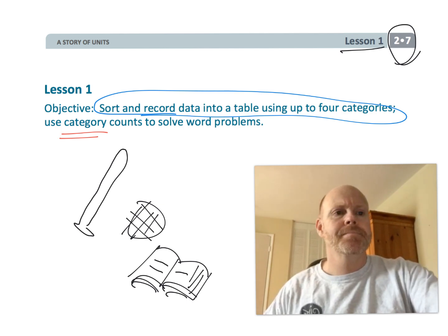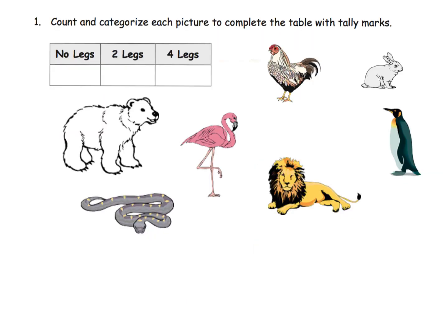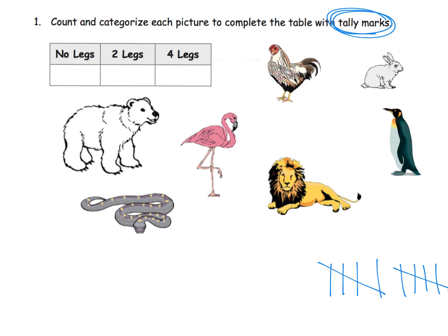So we start with classic categorizing. The directions say to count and categorize each picture to complete the table with tally marks. Tally marks are that classic concept of going one, two, three, four, five in groups of five. We don't have to count that high on this specific problem, but this is the kind of thing we want students to be talking about and organizing their tallies.